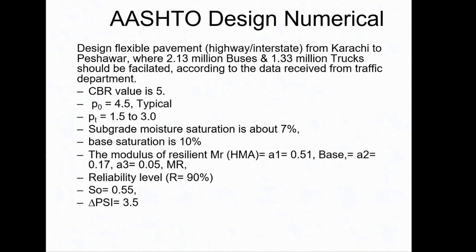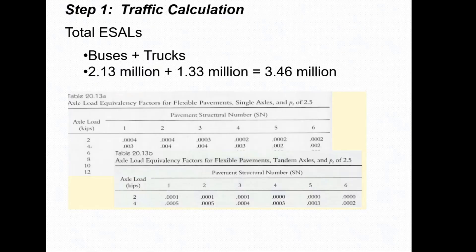We would like to design a flexible pavement highway — an interstate from Karachi to Peshawar — where 2.13 million buses and 1.3 million trucks need to be facilitated. We have received data from the traffic department including CBR value, PNOT, subgrade moisture condition, and modulus of resilient for each layer such as top layer, subgrade, and subbase. We also have the reliability level.